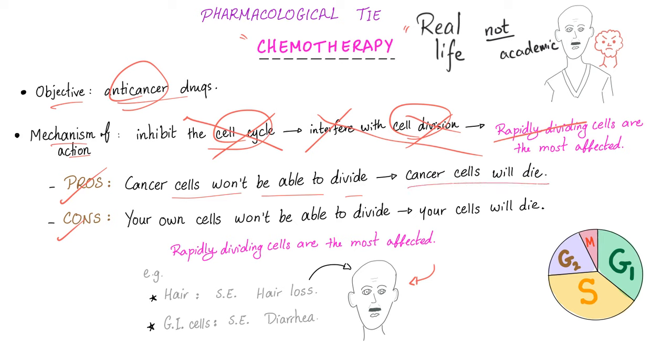Wonderful. But, there are no solutions in life. There are only trade-offs, as Dr. Thomas Sowell said. The cons? Your own cells won't be able to divide. Eventually, your cells will die. And the rapidly dividing cells of yours are the most affected.